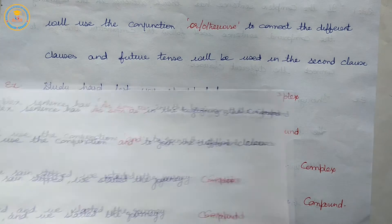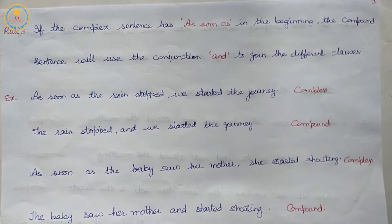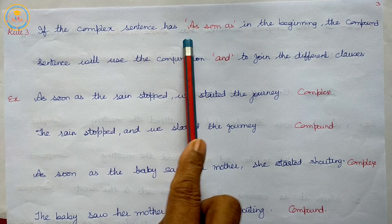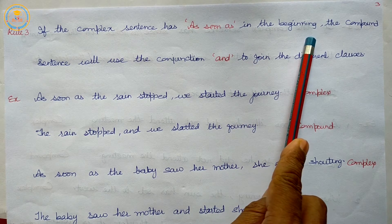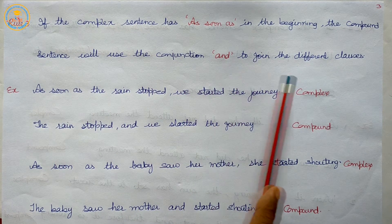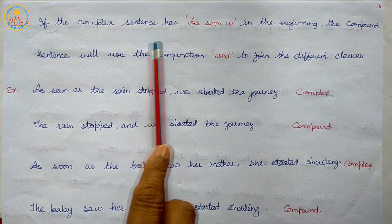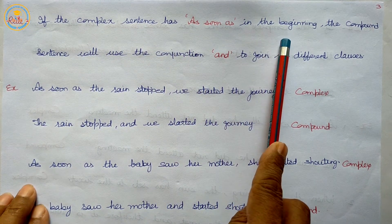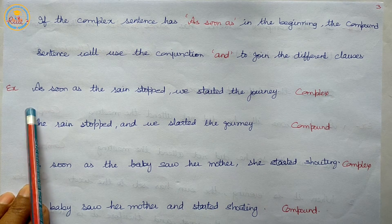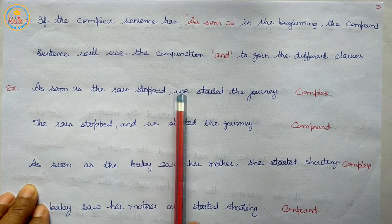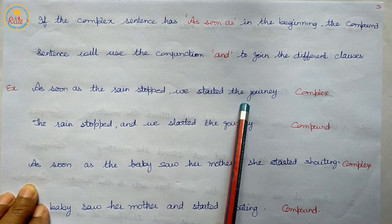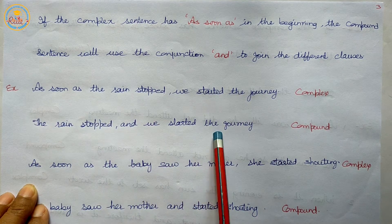Rule three: if the complex sentence has 'as soon as' in the beginning, the compound sentence will use the conjunction 'and' to join the different clauses. Example: 'As soon as the rain stopped, we started the journey' becomes 'The rain stopped and we started the journey.'